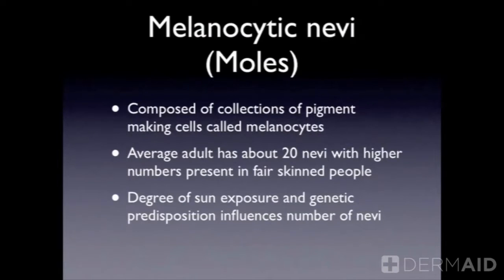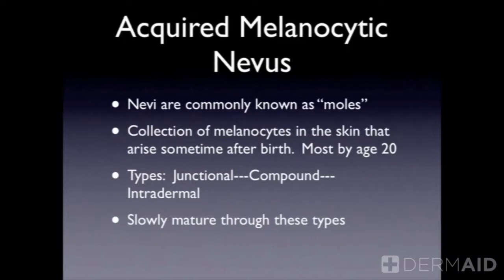Melanocytes are what make up moles, and melanocytes are the cells within our skin that give us color. Clusters of these melanocytes make up melanocytic nevi, or moles. The average adult has about 20 moles, but if you're fair-skinned, you're probably going to get more. Or if you have a genetic predisposition — a family history of lots of moles — then there's a good chance you will get lots of moles. The degree of sun exposure will influence the number of moles you will grow, and the more sun, the greater the risk that one of these moles may turn into a cancerous growth.